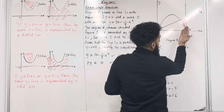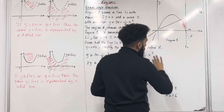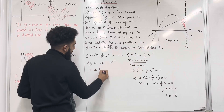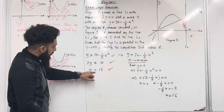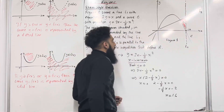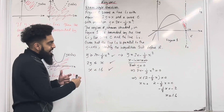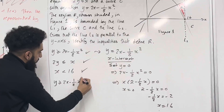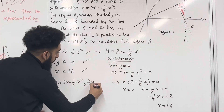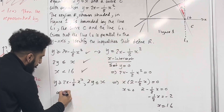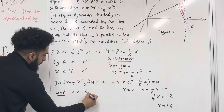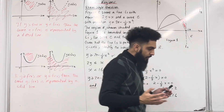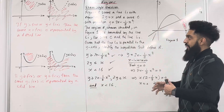This shaded part over here is to the left of x equals 16. So the inequality for the line L2 will therefore be x is less than 16. The equal is not included because for the line L2 we have a dotted line. So the inequalities that define R are: y is greater than or equal to 2x minus 1 over 8x squared, 2y is less than or equal to x, and x is less than 16. That there, ladies and gents, completes this exam style question and also completes this teaching video. If you found this teaching video useful, please don't forget to subscribe.